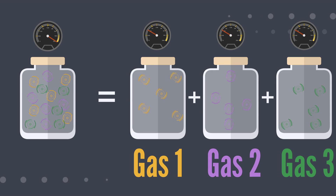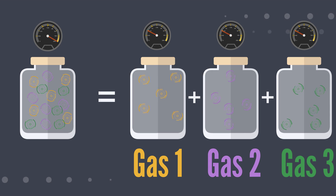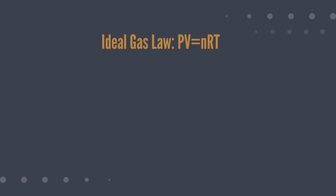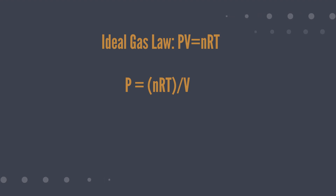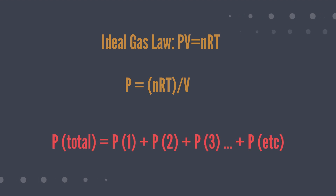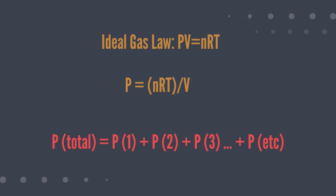Now let's look at the formula for Dalton's law of partial pressure. First, let's derive the ideal gas law where pressure times volume equals nRT. We can see that the pressure is equal to nRT over V. Now let's look at Dalton's law of partial pressure where, at a constant volume, we can add the partial pressures of the individual gases to equal the total pressure of the combined gases.